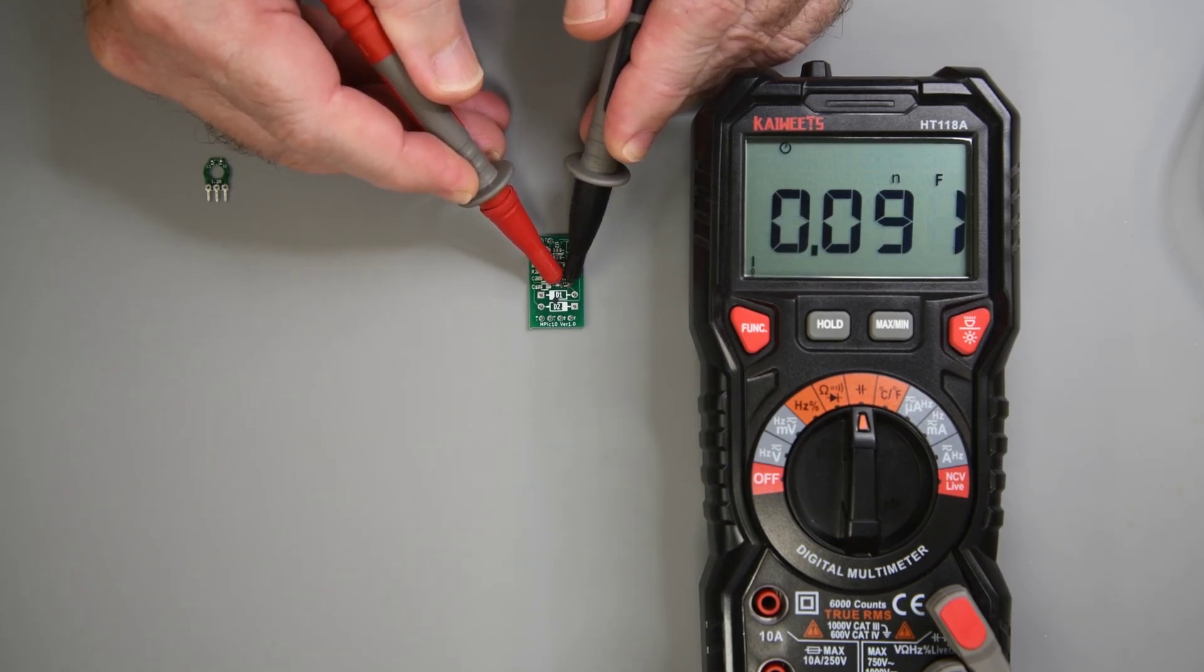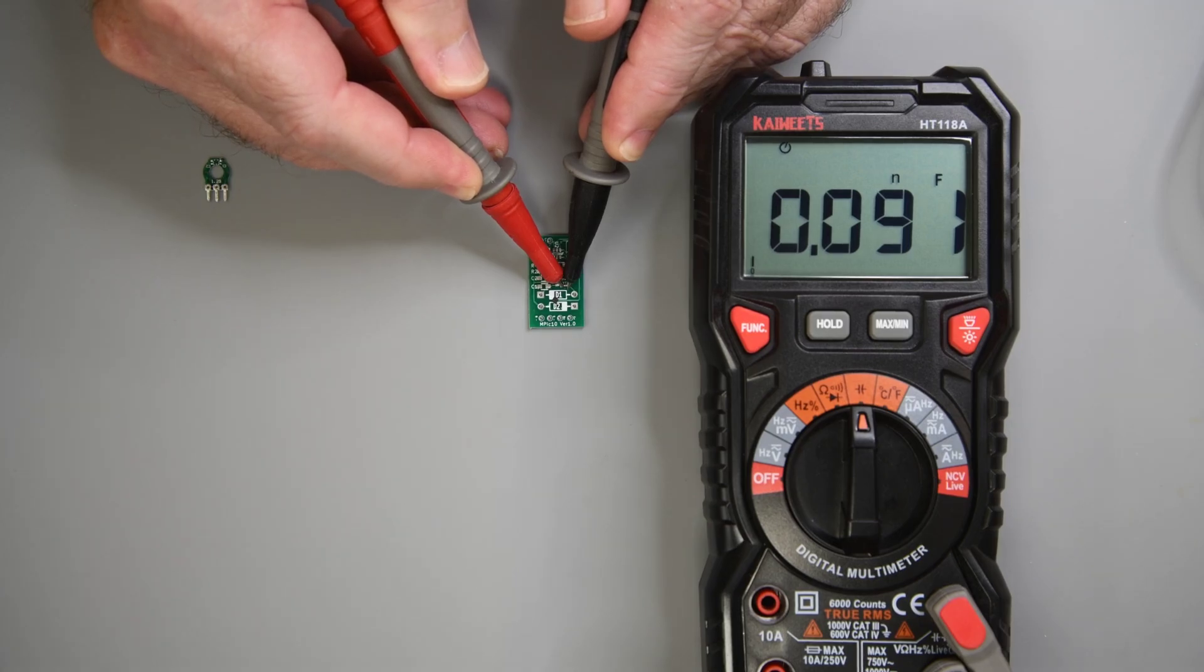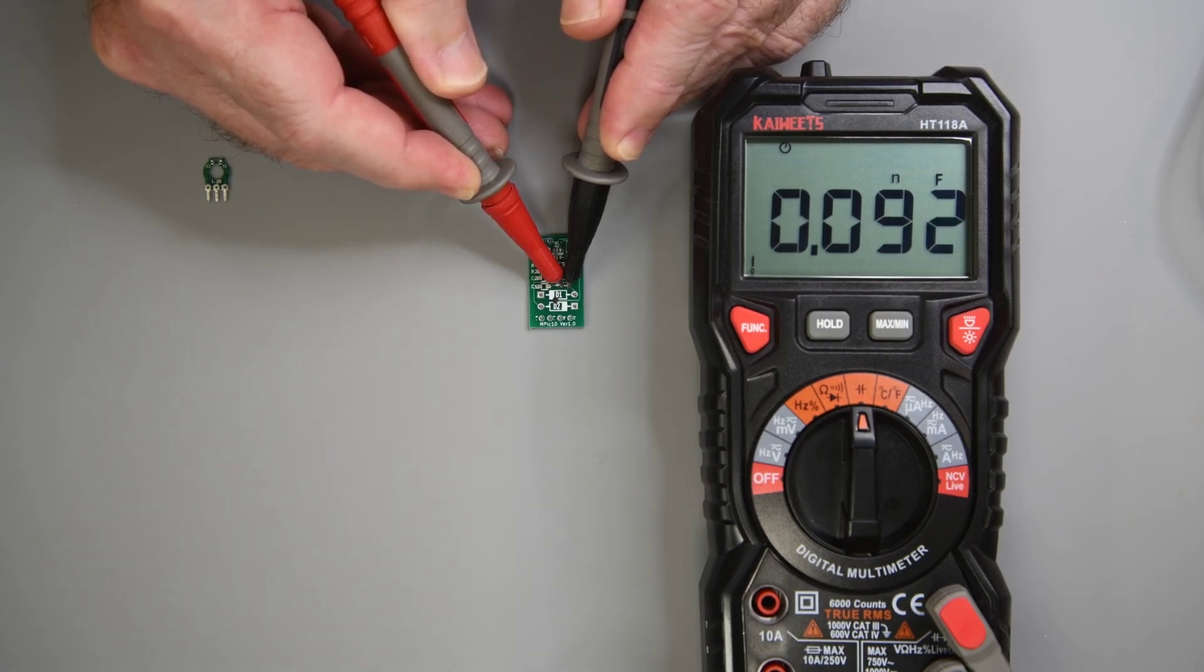And C2 is reading 91 picofarad. I expected it to be small with the speed of the output signal. And 91 picofarad would be a standard value. So it's a pretty small cap. Probably just for very high frequency noise suppression.